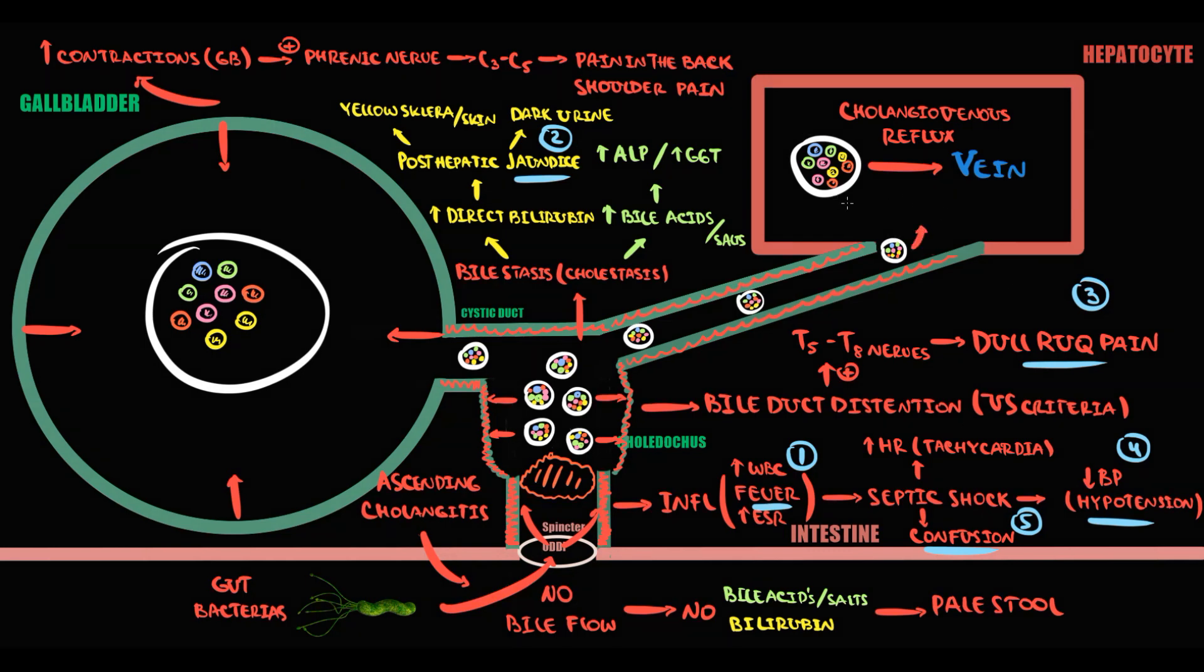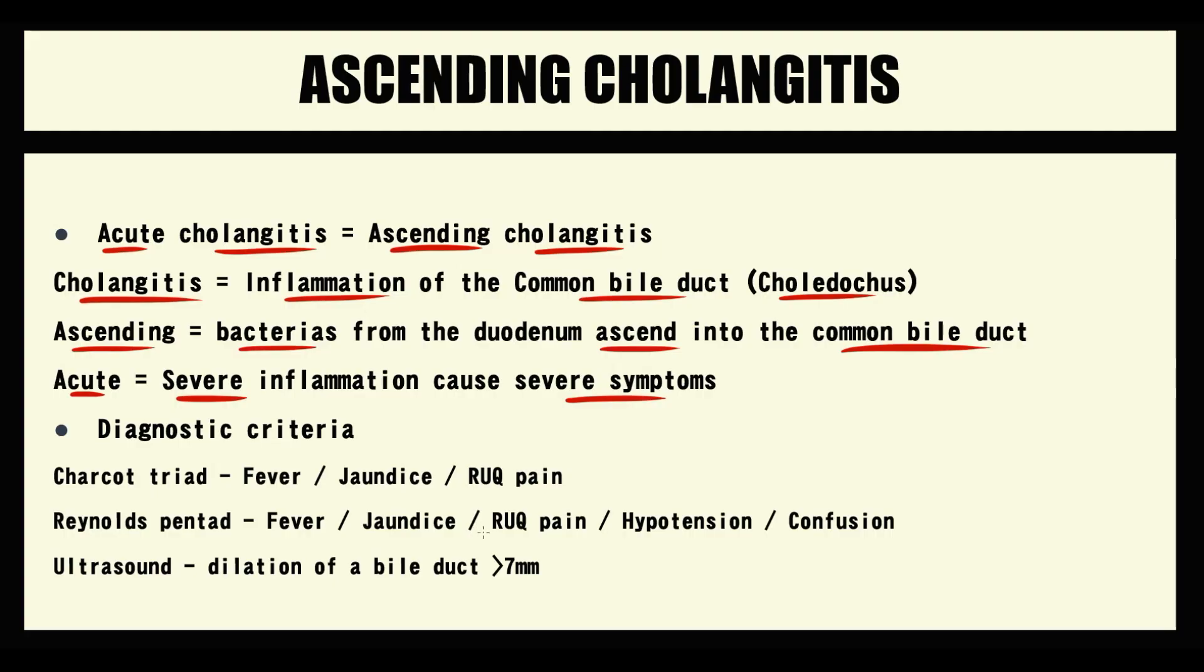Extremely severe cholestasis causes liver injury. With liver injury, ALT and AST increase. To visualize obstruction, usually we use ultrasound, where we can determine the dilation of the choledocus. Dilation of the bile duct more than 7 mm is one of the major criteria of acute cholangitis.